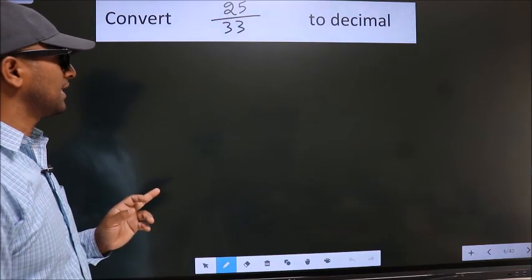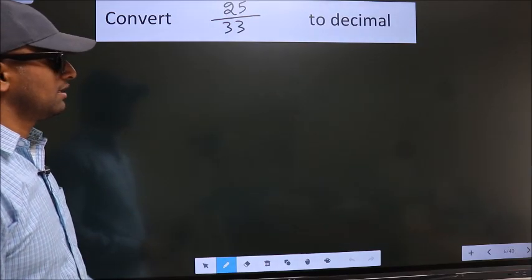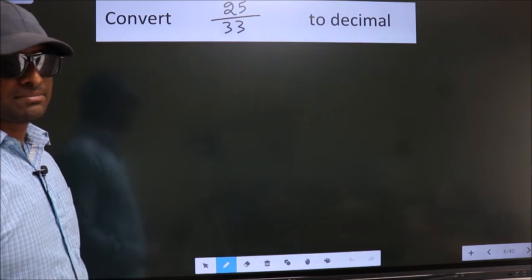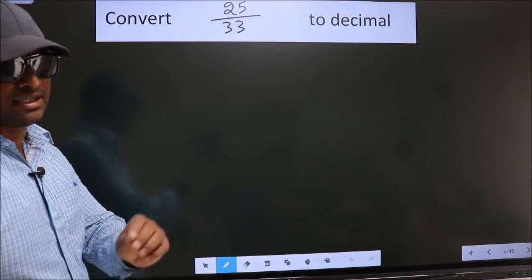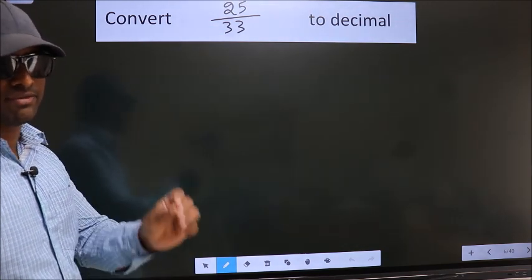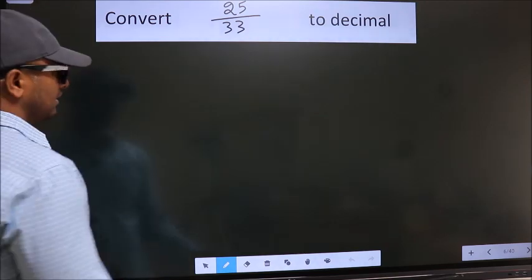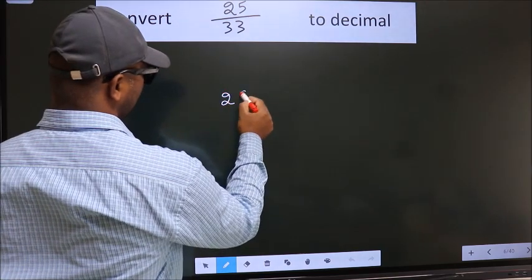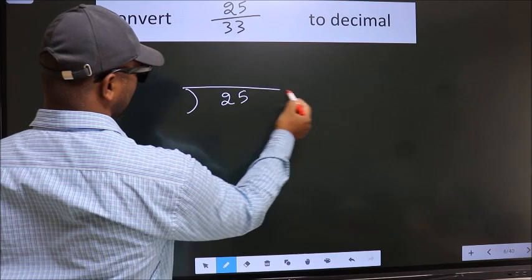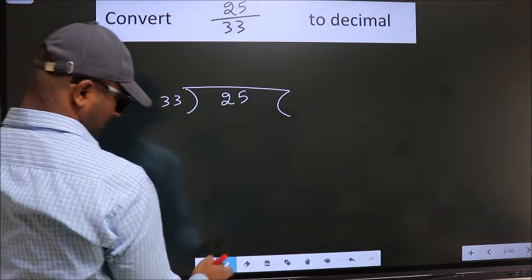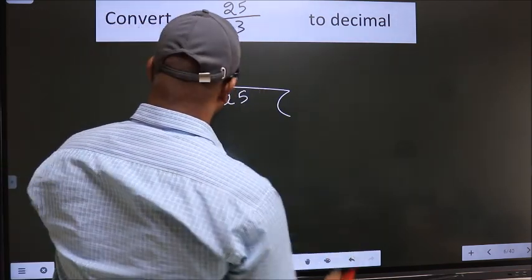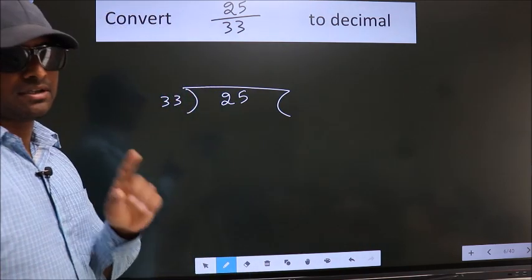Convert 25 by 33 to decimal. To convert this to decimal, we have to divide, and to divide we should frame it in this way. 25 here, 33 here. This is your step one.